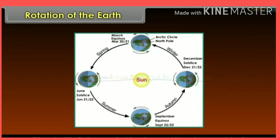If the axis of the earth was vertical, then there would have been equal duration of day and night — that is, a 12-hour day and a 12-hour night.